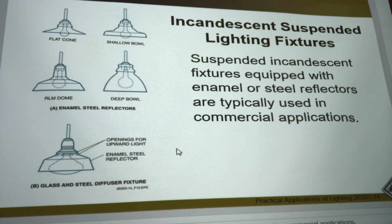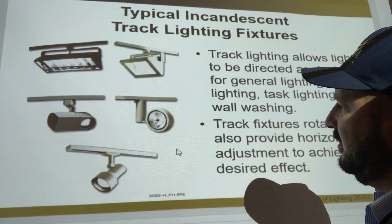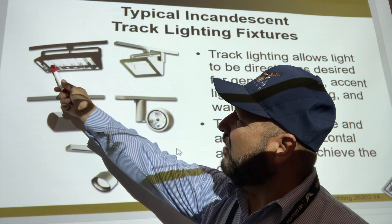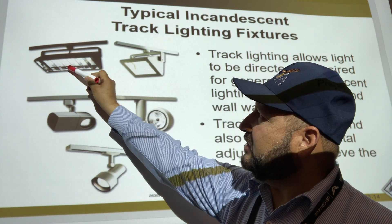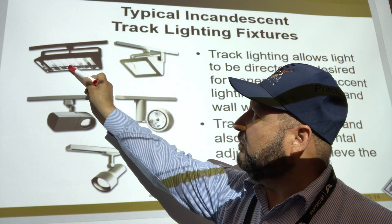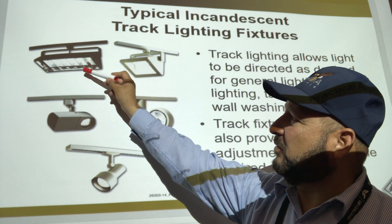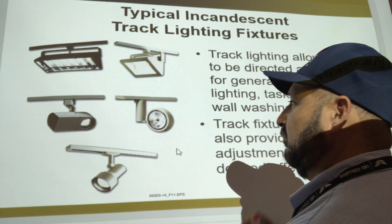Track lights are used a lot in commercial applications. Parabolics — when you're looking at a parabolic fixture, you're not going to see the light directly in your eyes. That's what a parabolic is about. If you look straight up it's a direct light, but with a parabolic it focuses all the light in one direction, so if you're looking at it from an angle you won't get blinded.